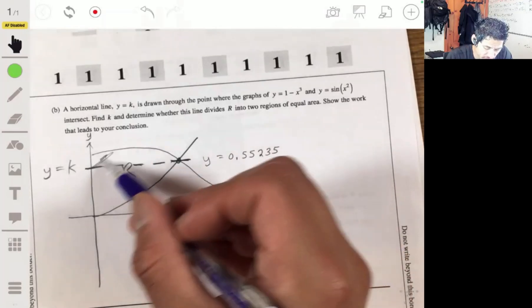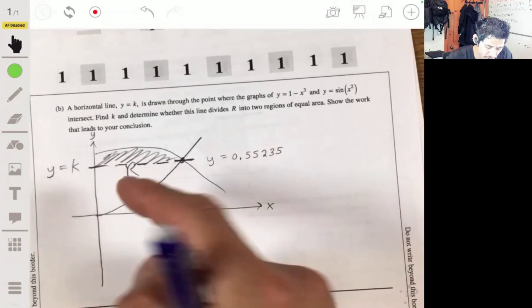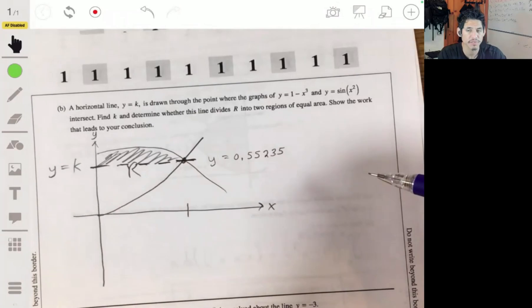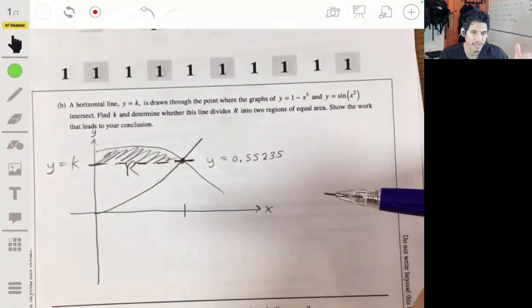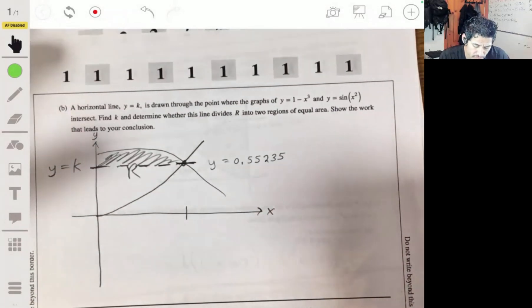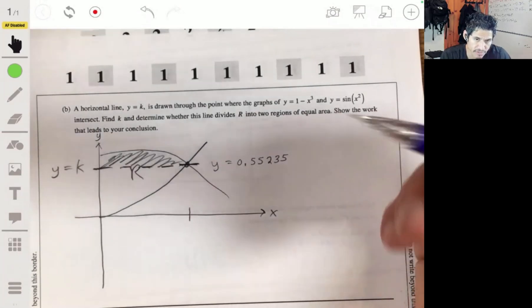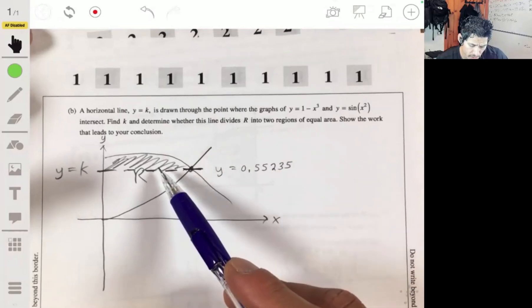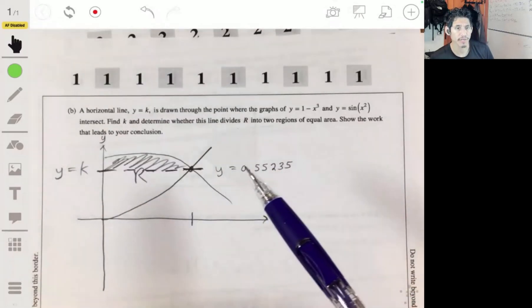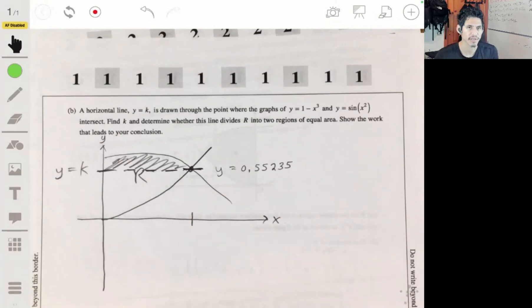We want to see if this region and this region are equal. So we really just have to find one of them because we already have the total area of r. And if it's not half of that thing, then it's not equal. It doesn't really matter. I always get numbers very close to each other.